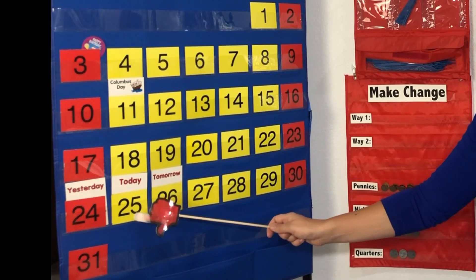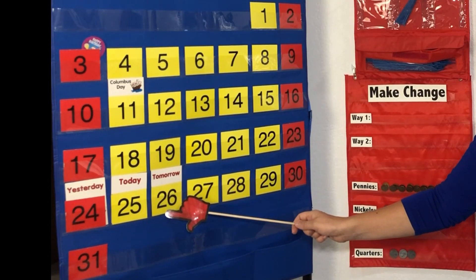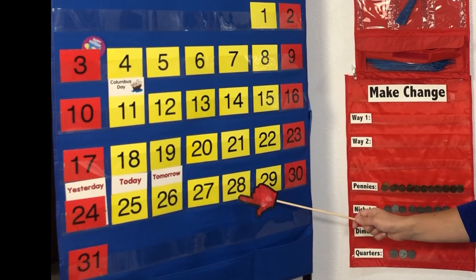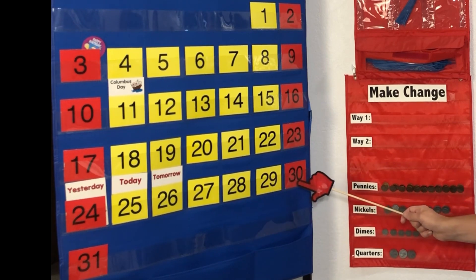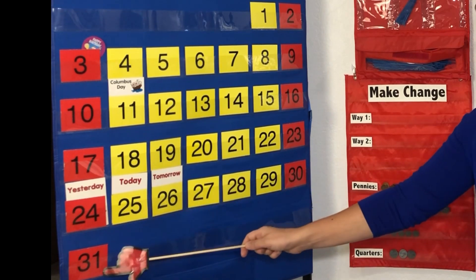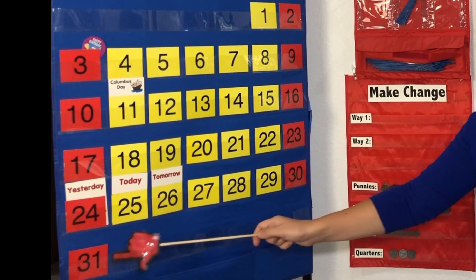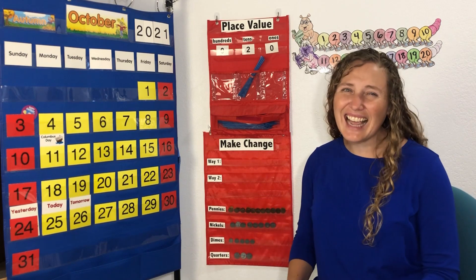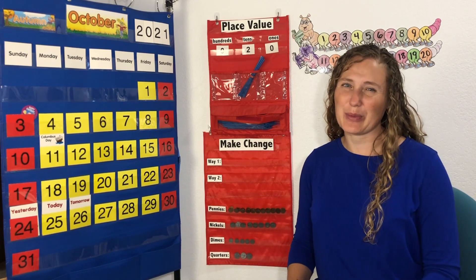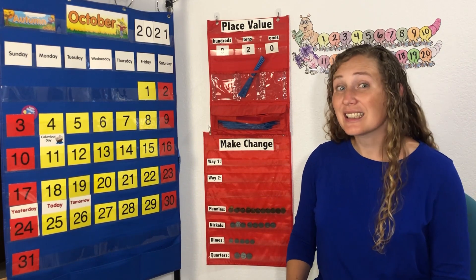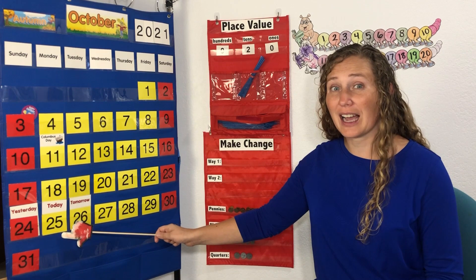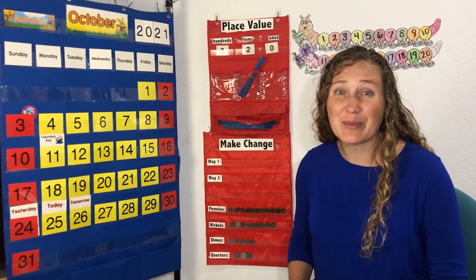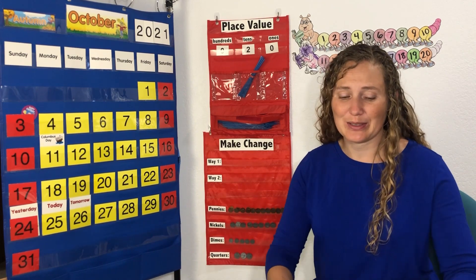Let's count up from 25 together: 25, 26, 27, 28, 29, 30, 31 — and the end of October. Let's compare our number 25 with some other numbers.